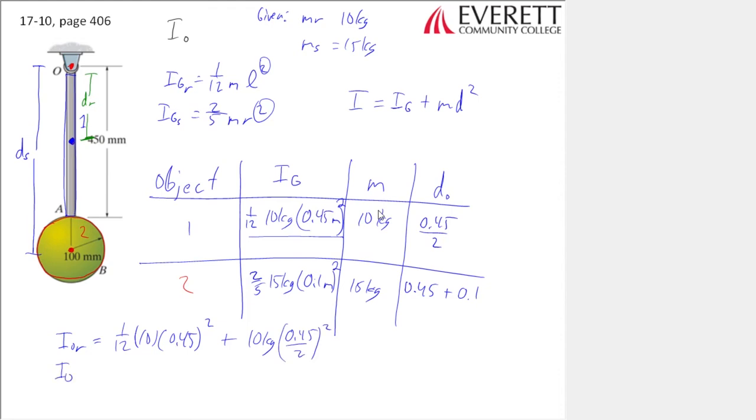My IO for the sphere is 2/5 times 15 times 0.1 squared plus 15 kilograms times 0.45 plus 0.1 squared. Total is just those two added.